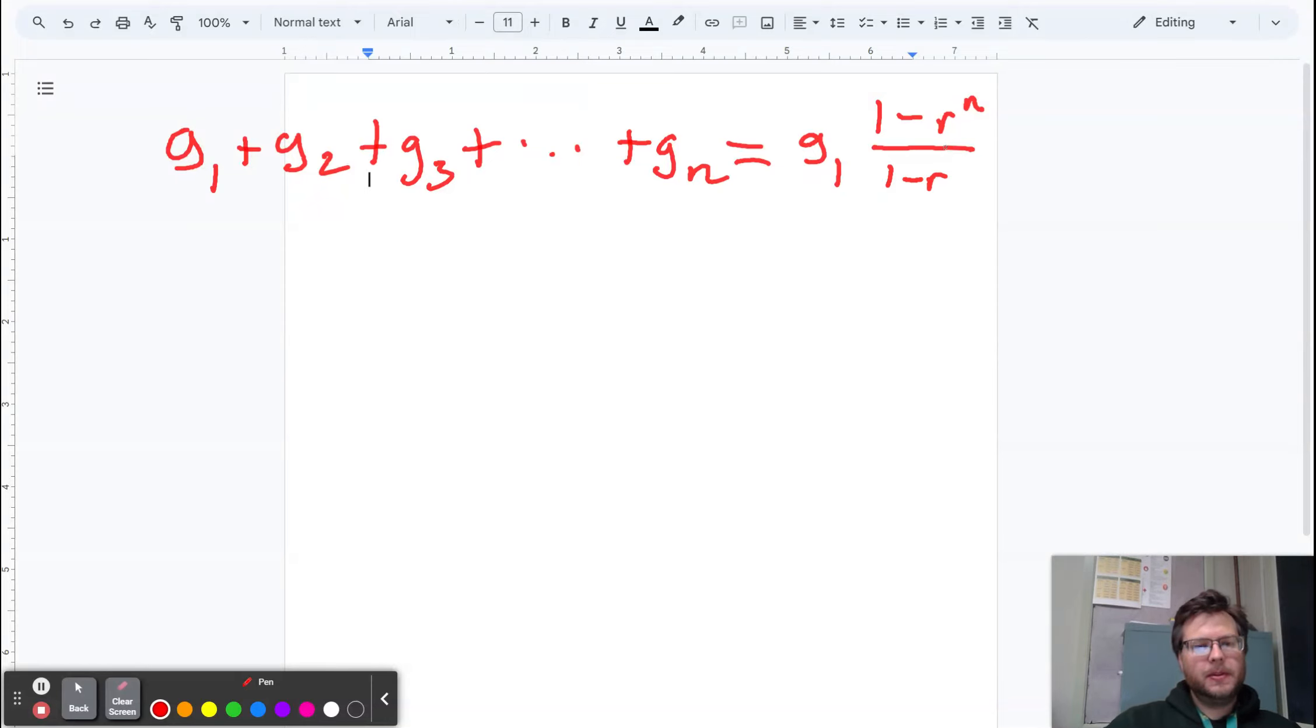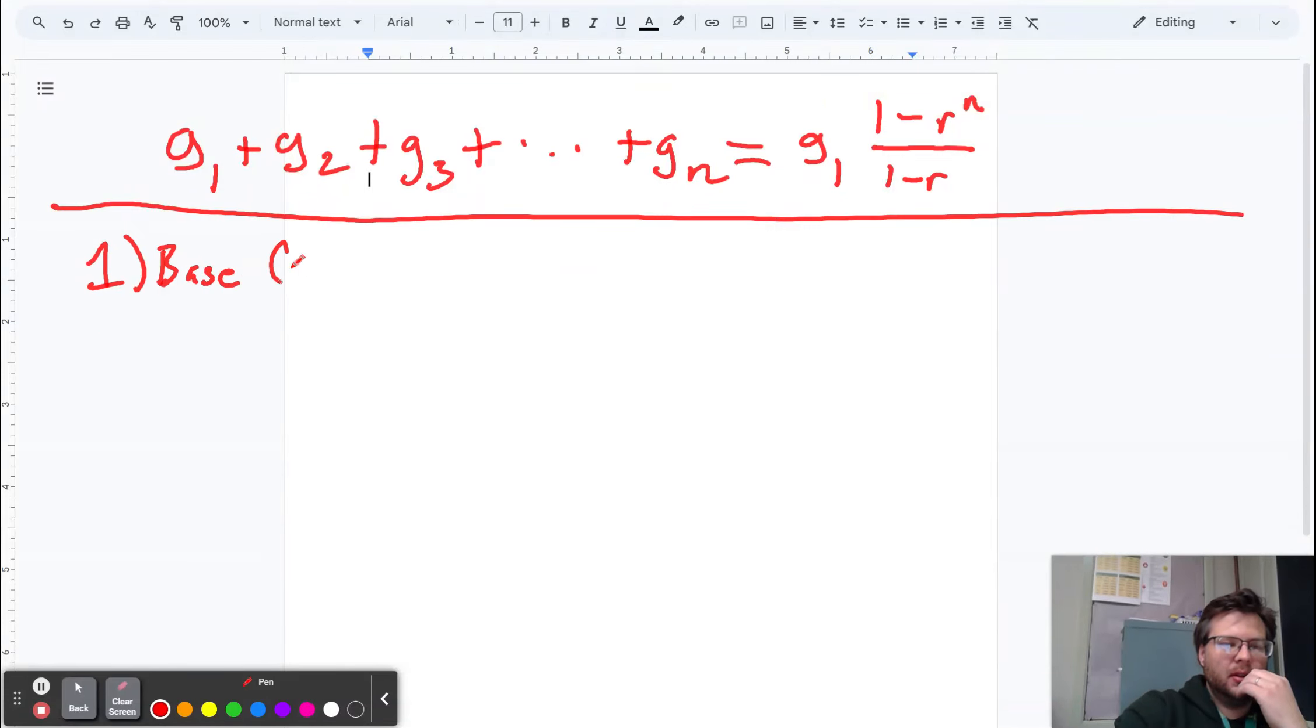I think that's correct. So what do we need to do here? Let's prove that it's true in the base case. So the base case is n equals 1. And so let's try it. If n equals 1, the first side is g1. The second side is g1 times 1 minus r to the first over 1 minus r. And that equals g1. And so we checked out.